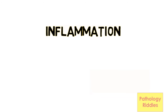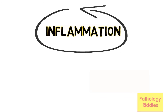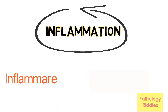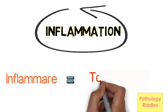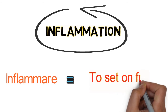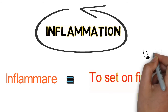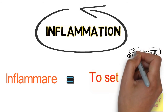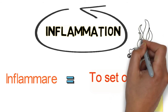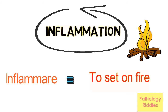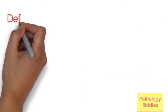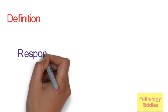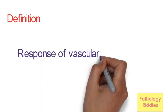Let us know what this term means. The term inflammation is derived from the Latin term 'Inflammare' which means to set on fire. Basically it acts like our weapon system against harmful agents. It tries to activate our blood vessels, cells and molecules to protect the body. Inflammation is defined as the response of vascularized tissue to injury.